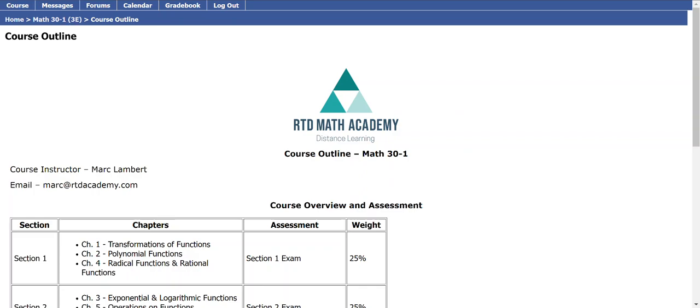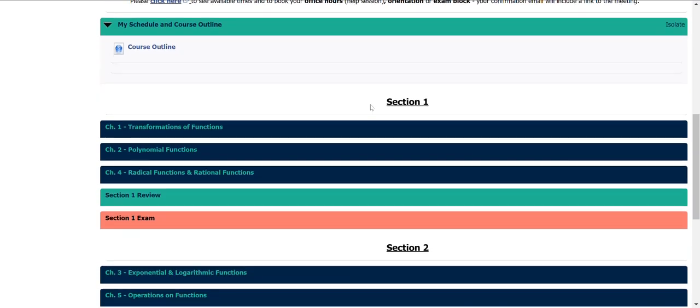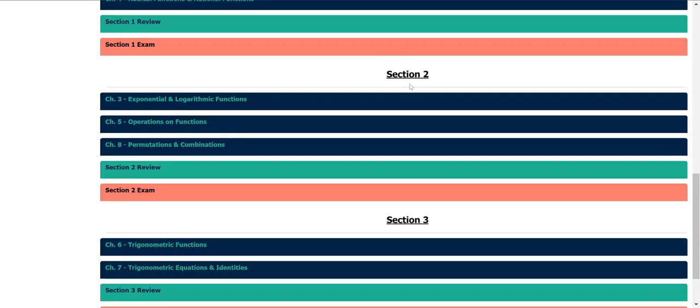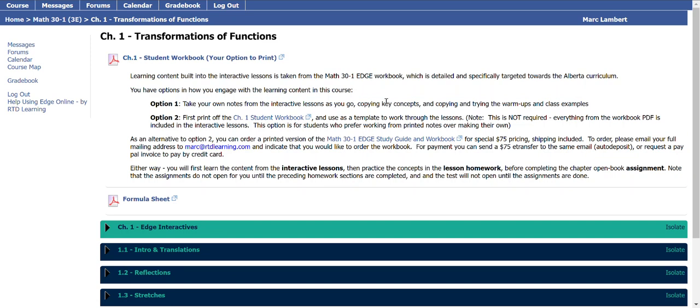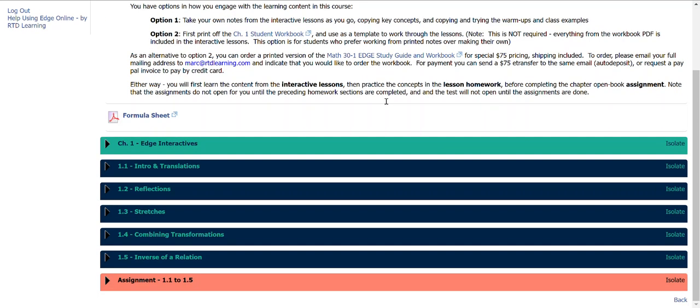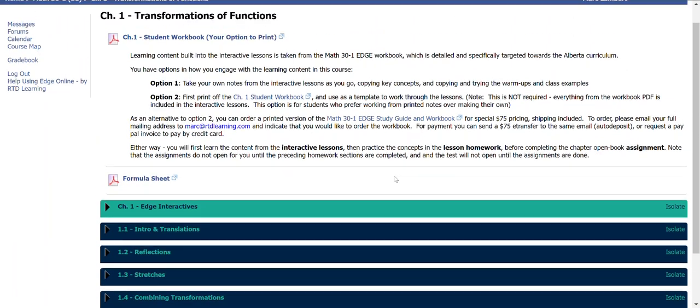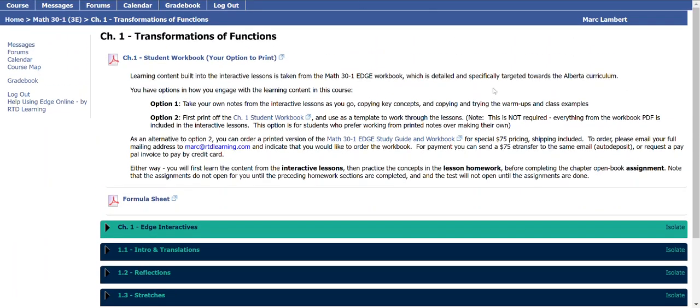Now I'm going to leave here. And next, let's look at how the course is actually divided into those three sections. I'm going to jump into Chapter 1, Transformations. You can see that there are five lessons with a cumulative assignment at the end. The Edge Interactives are different kinds of tools that you can play with, not necessarily part of the instruction though. So you can get started at 1.1, Intro and Translations. But before I go there, I'm going to go up to the top and show you a couple of PDFs that you should be able to access.